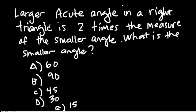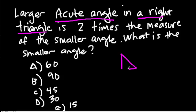Here's a triangle problem. The larger acute angle — acute being less than 90 — in a right triangle is 2 times the measure of the smaller angle. What is the measure of the smaller angle? Remember that a right triangle has exactly one right angle, meaning exactly one 90-degree angle. We're trying to find an acute angle, and 90 degrees is not acute, so the 90-degree choice is out. That leaves only 4 choices.